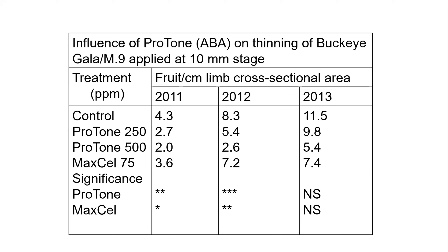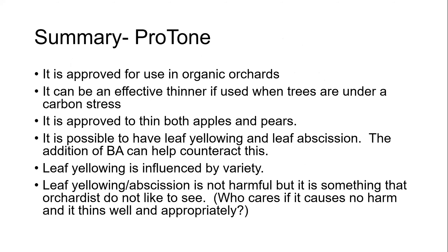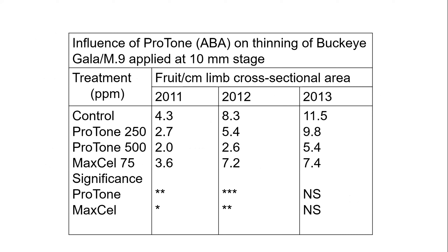I'm showing thinning data collected over three years — 2011, 2012, and 2013. I haven't done more since, primarily because the company showed no interest in developing it and I didn't think it would be registered. But it's the same product, so it's useful to show what it can do. I'm showing four treatments: a control, Proton at 250 and 500 parts per million, and MaxCel at 75 parts per million.